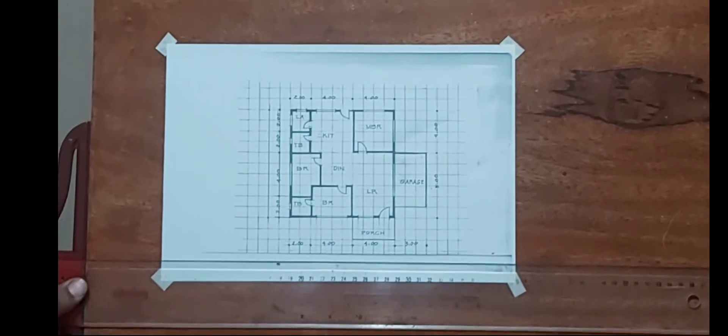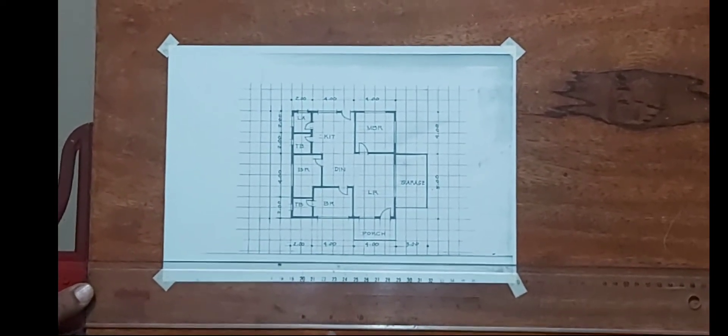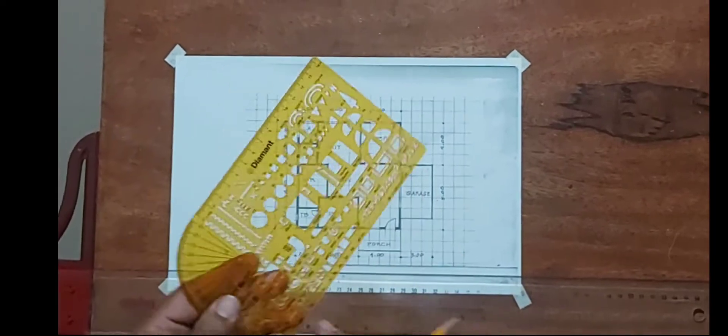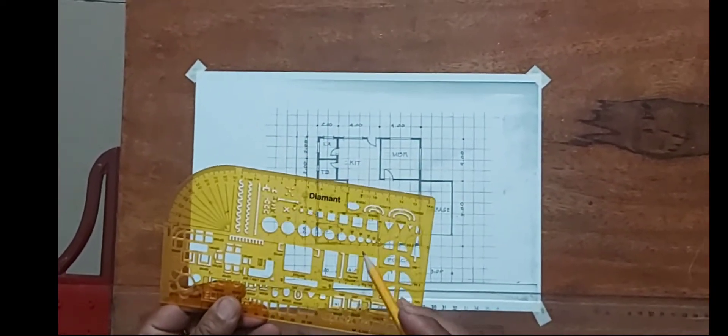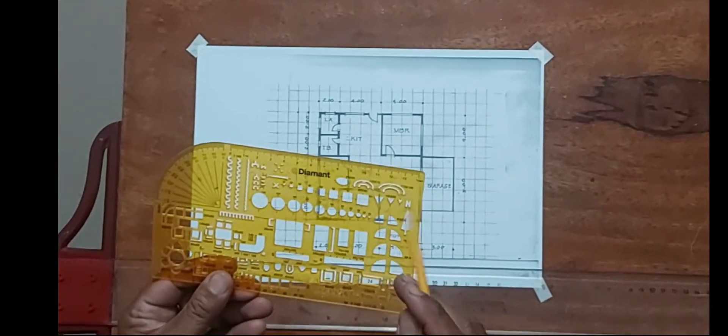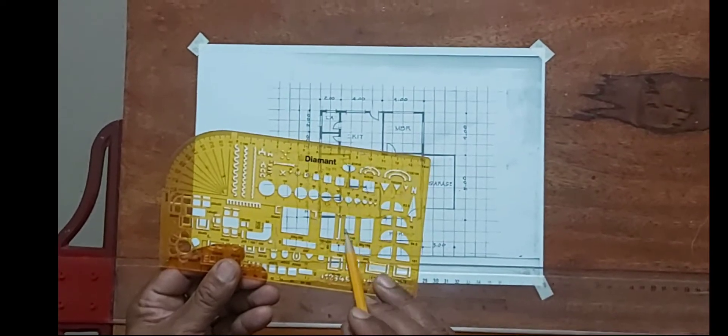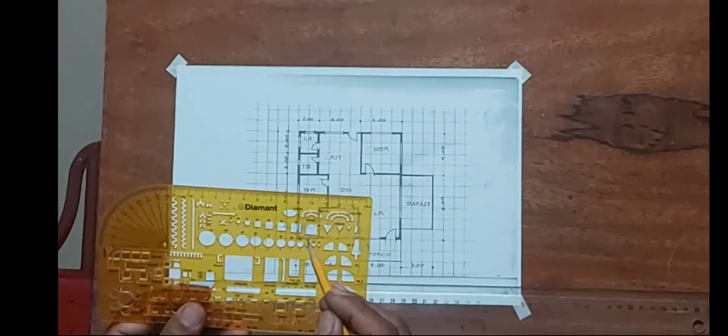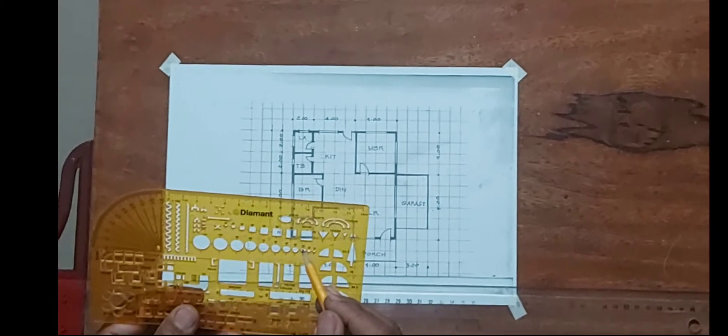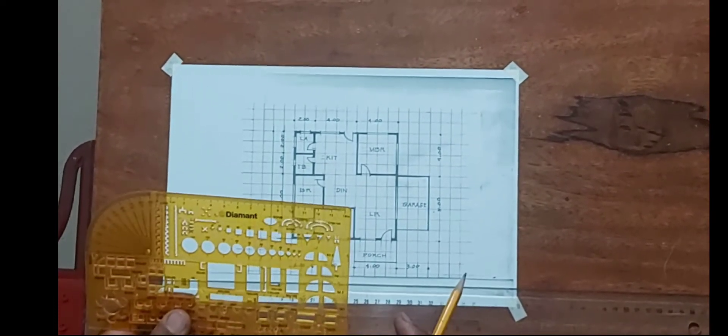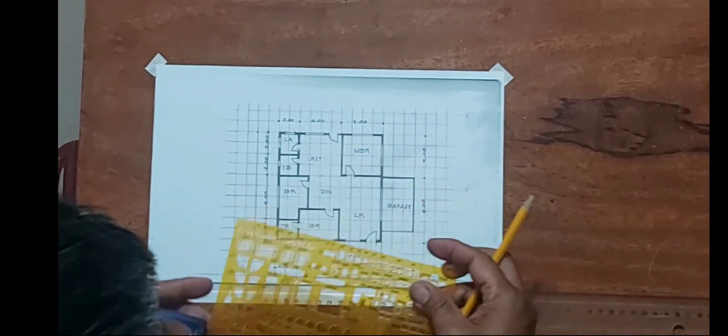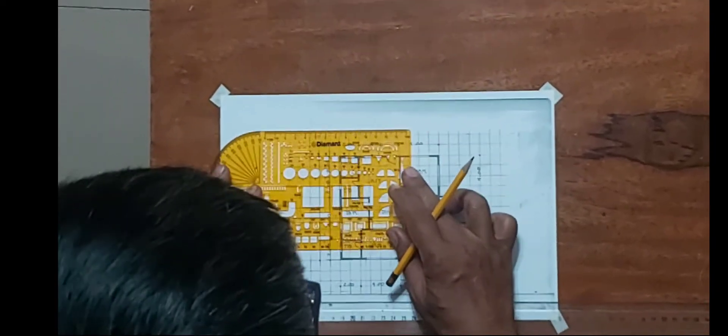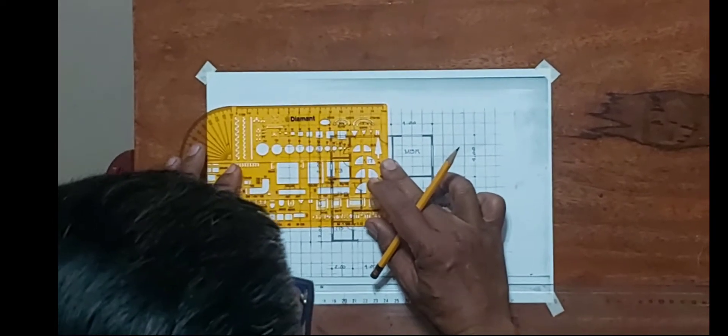So I'll be using a template if you have this template like this. You just have to use the smallest one since we are using the scale one is to 100, so you can choose maybe 30 mm. So let's start with the laundry area, so I have to just draw the small circle at the center of that room.